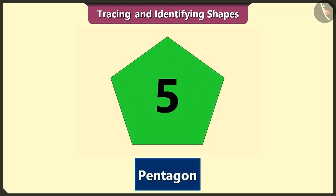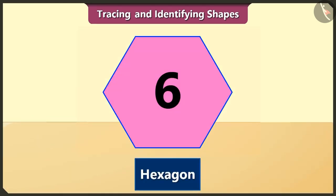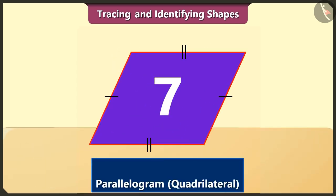The five-sided pentagon is fifth in order. The six-sided hexagon is sixth in order. The four-sided quadrilateral is seventh in order.